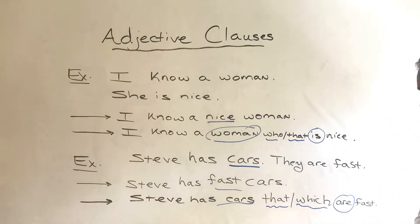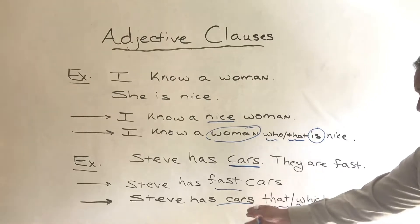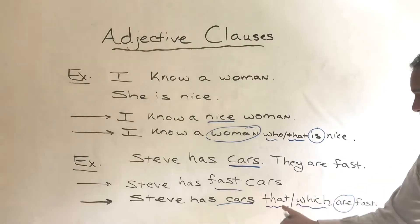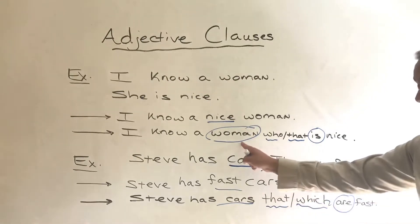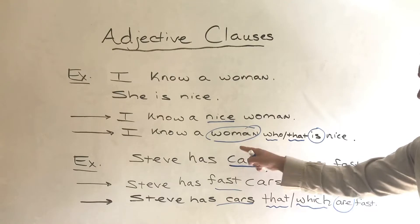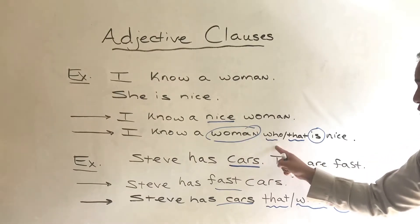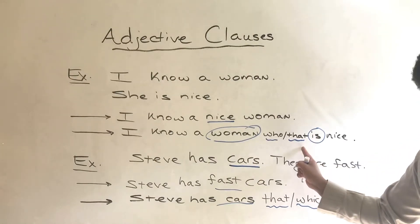Keep that in mind: when we're talking about objects we can say 'that' or 'which.' When we are talking about people, we can say 'who' or we can say 'that.'